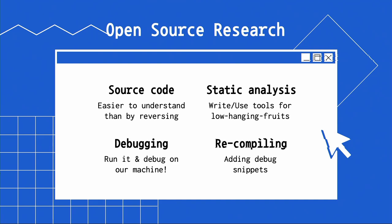When you're searching open-source projects, you need to make sure you have the latest code, because a lot of times the project distributes pieces of code across multiple repositories. Another very good thing about open-source research is that if there's a piece of code you don't fully understand, you can ask your favorite AI chatbot. And of course, static code analysis — whether your own tools or popular ones — can help you find low-hanging fruits or leads. Debugging and recompiling is also quite easy since you have the source code, and you can add debug snippets as needed.